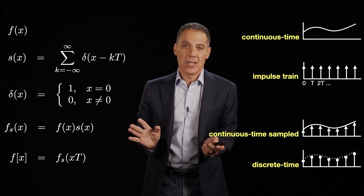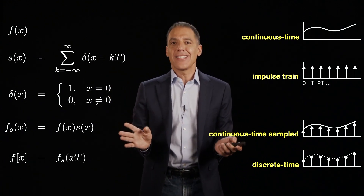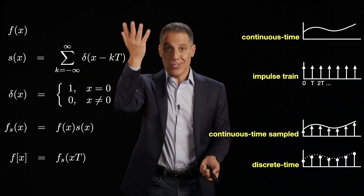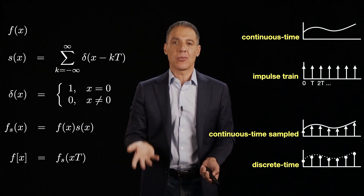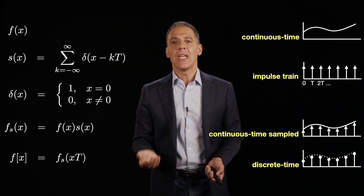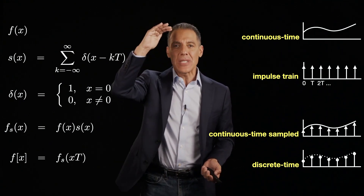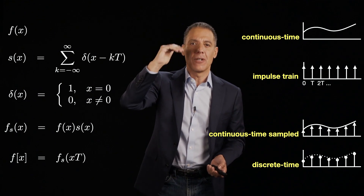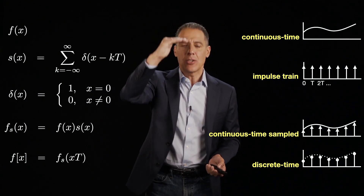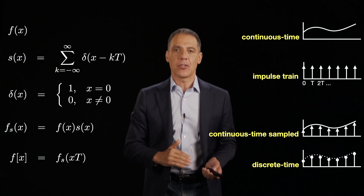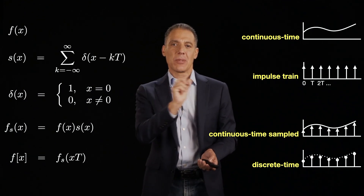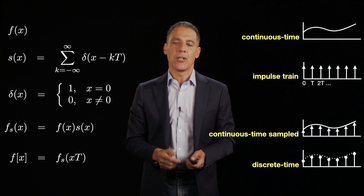You might wonder why I didn't talk about this first, since this is sort of how we got discrete-time signals. The reason is we needed all that machinery — convolution and Fourier — to really understand this process. That's why the order seemed a little bit in reverse.